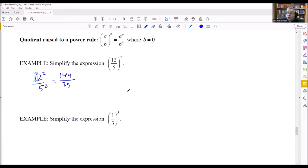The next one, we have 1/3 raised to the 5th power, which means we would have 1 to the 5th, and then we have 3 to the 5th. 1 to the 5th is 1. 3 to the 5th is 243, and that would be your answer for that one.